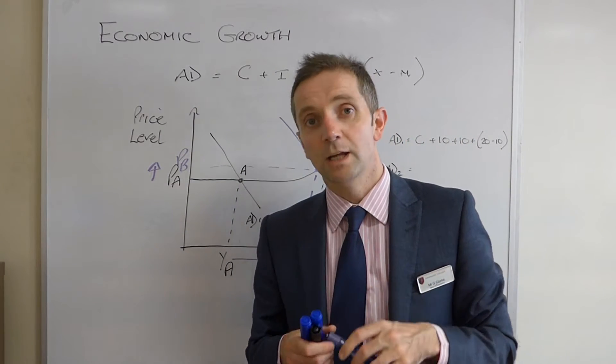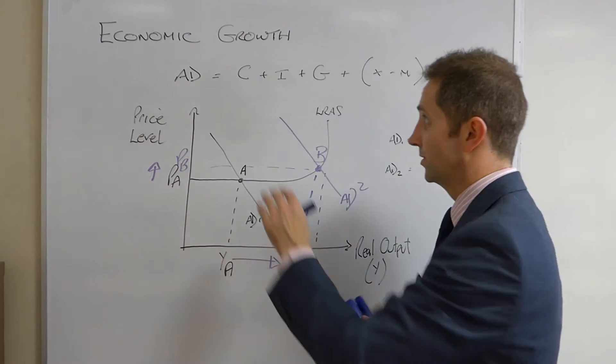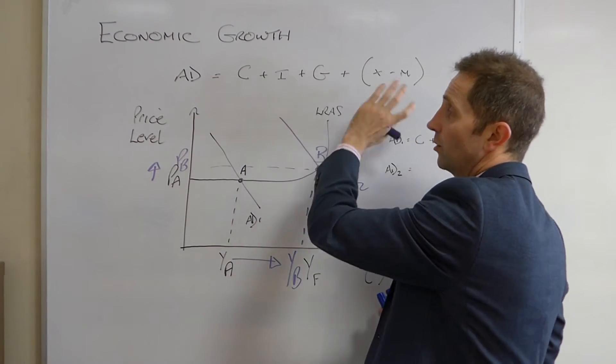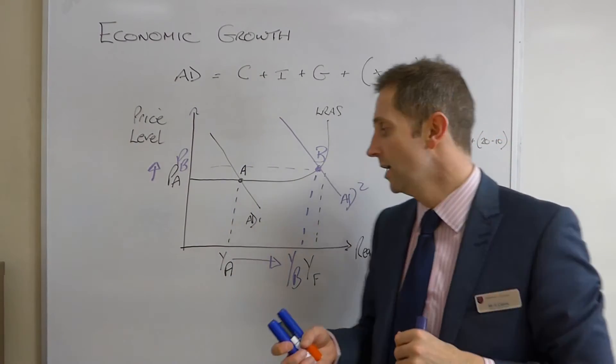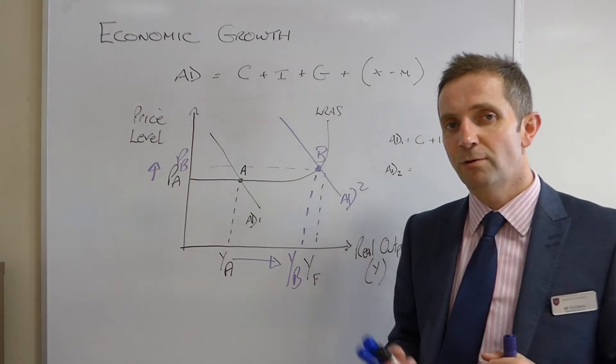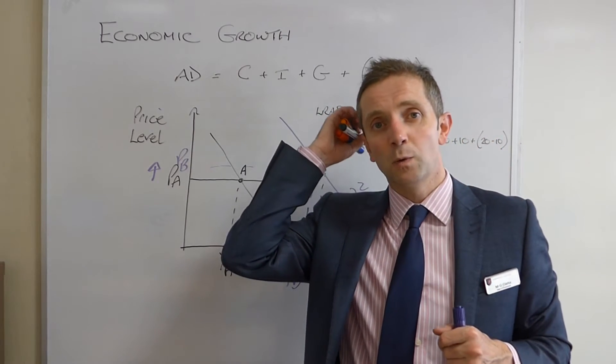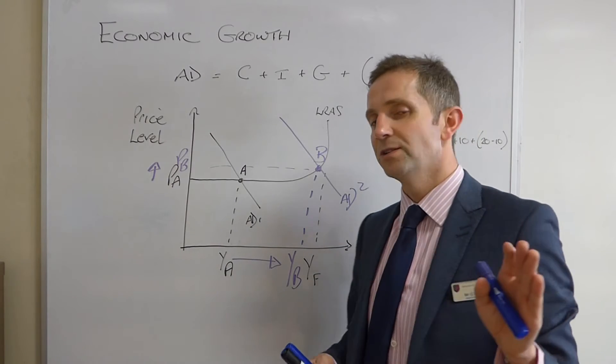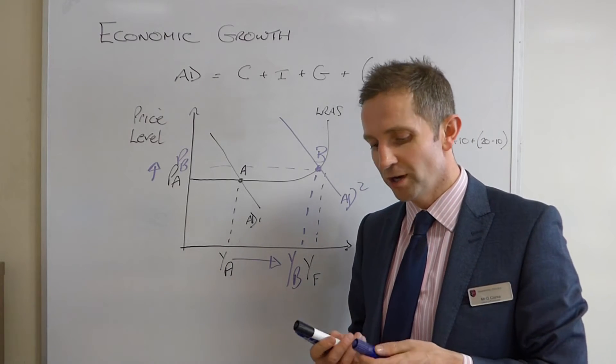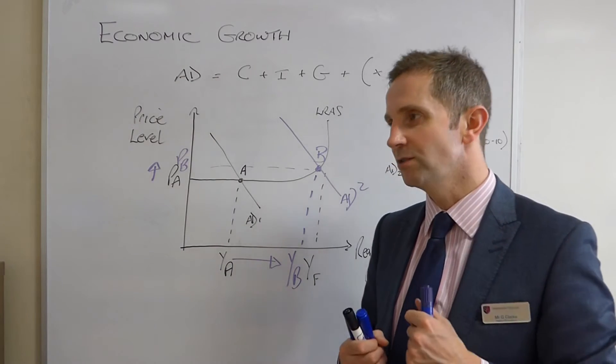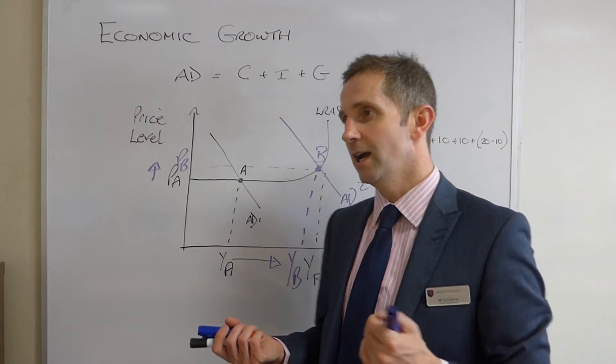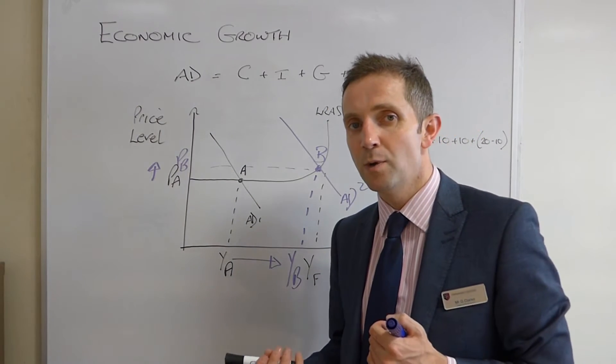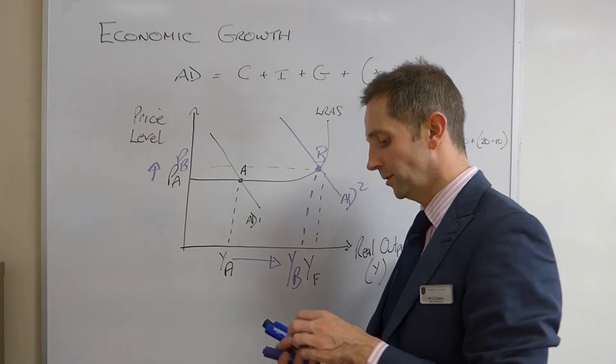So, we know that anything which causes C, I, G, or net exports to increase, that would shift AD2 to the right. Now, we'll have a think about what some of those things might be in a moment, but I just want to run by you something which one of my students used to do, and I think it's a really good way to illustrate this, particularly to the examiner in an end-of-year exam, or an external exam, for that matter.